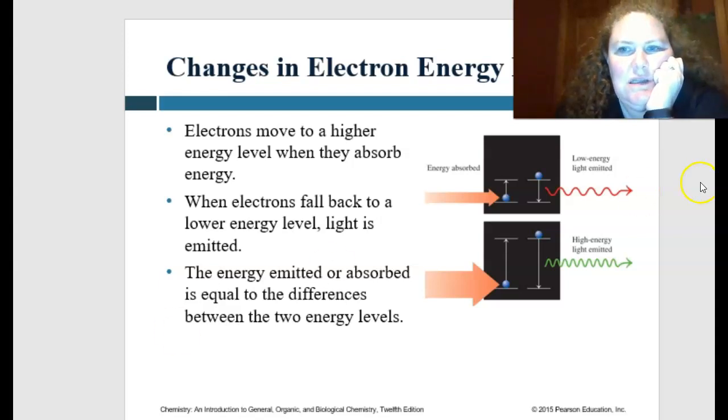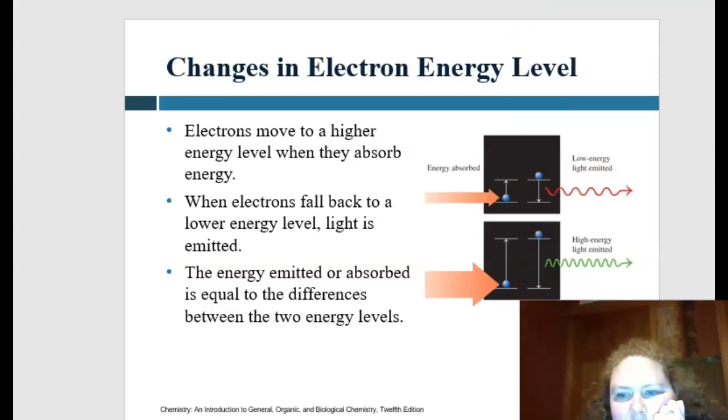When we have changes in the electron energy levels, the electrons are going to move to a higher energy level or a higher bookshelf when they absorb energy. But when the electrons fall back to the lower energy level or that lower bookshelf, then that light is going to be emitted or shown.